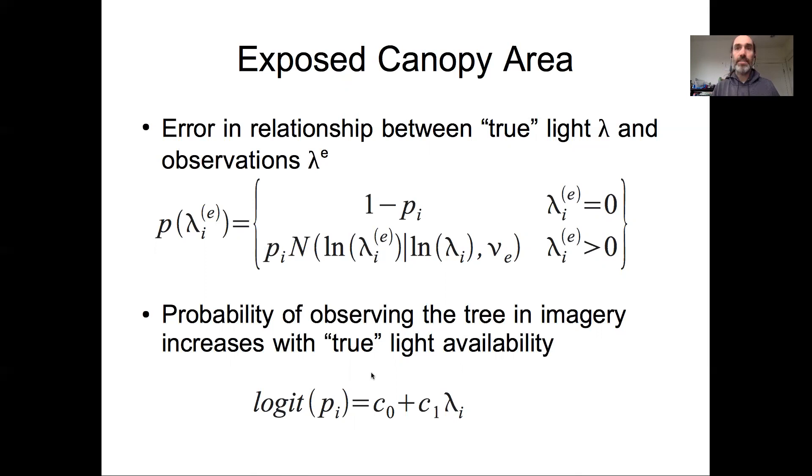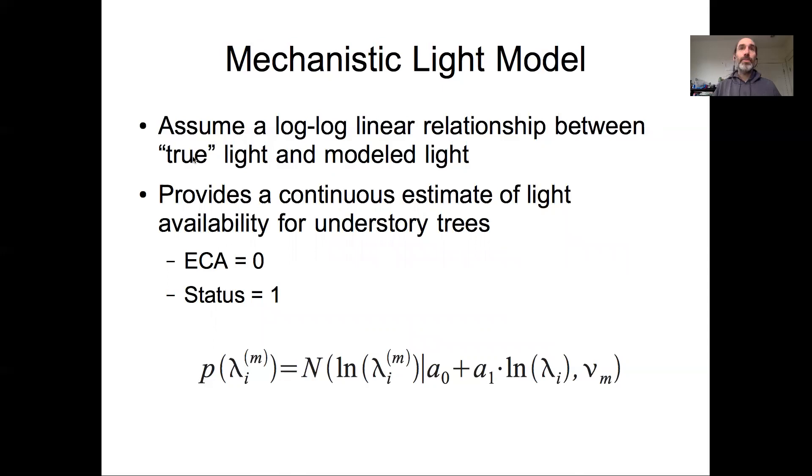For the mechanistic light model, we're going to again assume a log-log linear relationship, but we now actually have both an intercept and slope in that. So we're now treating the fact that the mechanistic light model might actually be biased relative to the remote sensing. But the mechanistic light model has an advantage that it provides this continuous estimate of light availability even to the understory.